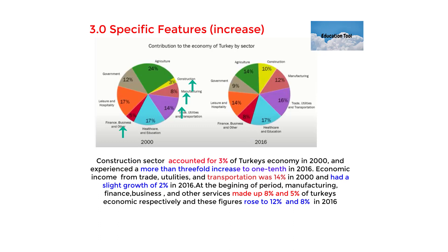Paragraph three reads: 'The construction sector accounted for three percent of Turkey's economy in 2000 and experienced a more than three-fold increase to 11% in 2016. Economic income from trade, utilities, and transportation was 14% in 2000 and had a slight growth of 2% in 2016. At the beginning of the period, manufacturing, finance, business, and other services made up eight and five percent of Turkey's economy respectively, and these figures rose to twelve percent and eight percent in 2016.'